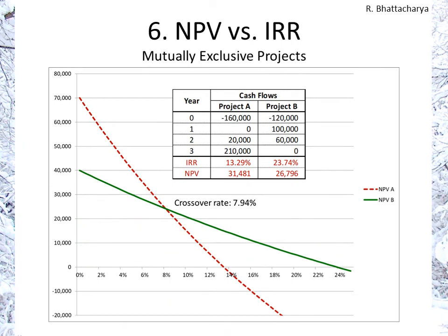This is the NPV profile for the two projects. Project A has the steeper downward slope and Project B is flatter. Project A has an IRR just above 13% whereas Project B's is close to 24%. The crossover rate is the point where the two projects give the same net present value. If our cost of money is 7.94%, we would be indifferent between the two projects — both give a positive value of over $20,000. At any cost of money less than 7.94% we choose Project A, and anything more than 7.94% up to 24% we choose Project B.